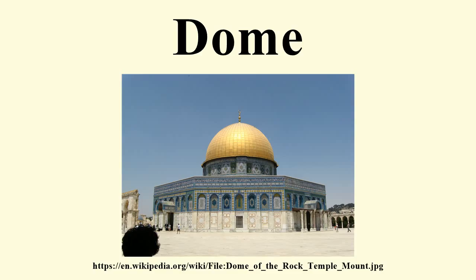Brick domes were the favored choice for large-span monumental coverings until the Industrial Age, due to their convenience and dependability. The new building materials of the 19th century and a better understanding of the forces within structures from the 20th century opened up new possibilities. Iron and steel beams, steel cables, and pre-stressed concrete have eliminated the need for external buttressing and enabled far thinner domes — whereas earlier masonry domes may have had a radius-to-thickness ratio of 50, the ratio for modern domes can be in excess of 800.